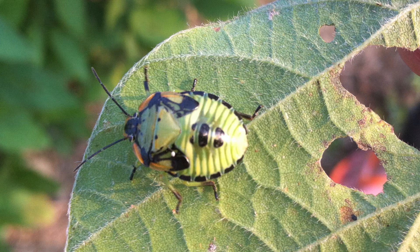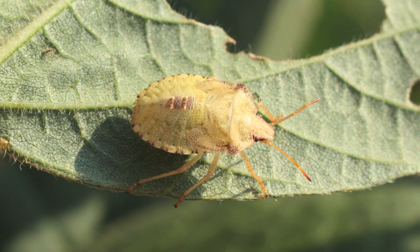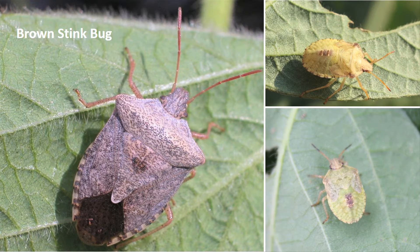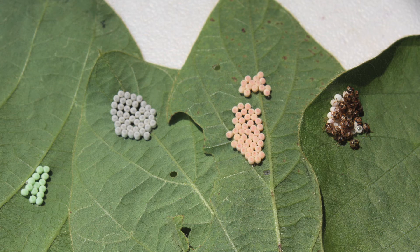Immature green stink bugs will typically have black, white, or orange markings on them, and that changes as they grow from one instar to the next. Immature brown stink bugs don't vary as much in color — they tend to be yellowish to light brown, which is pretty consistent across nymphal instars. Since these plant-feeding stink bugs cause similar damage, it's most important to recognize both adult and immature stages and count both when scouting, as both may cause damage. It can also be helpful to recognize stink bug egg masses — they lay eggs in a mass of 5 to 25 or 30 barrel-shaped eggs, which are somewhat unique looking and can indicate building populations.